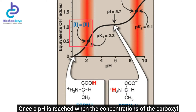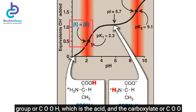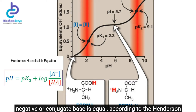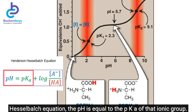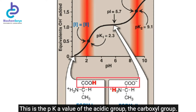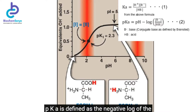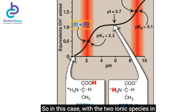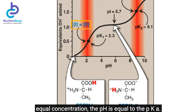Once a pH is reached when the concentrations of the carboxyl group (COOH, the acid) and the carboxylate (COO-negative, the conjugate base) are equal, according to the Henderson-Hasselbalch equation, the pH equals the pKa of that ionic group. pKa is defined as the negative log of the acid dissociation constant Ka. The pKa value indicates the strength of an acid. With the two ionic species in equal concentration, the pH equals the pKa.